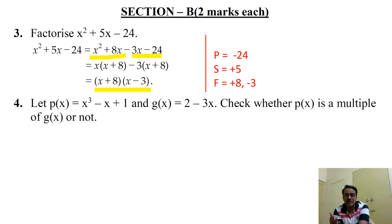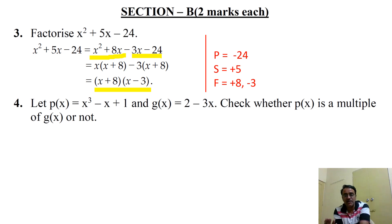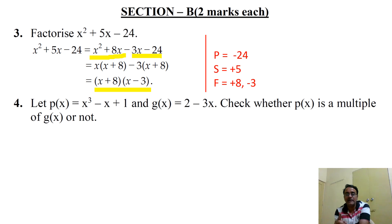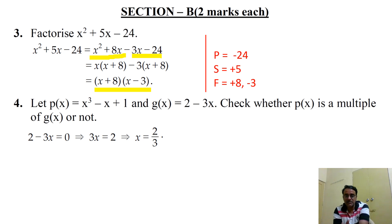Question 4: let p(x) = x³ - x + 1 and g(x) = 2 - 3x. Check whether p(x) is a multiple of g(x) or not. We check by finding the remainder — if the remainder is 0 then p(x) is a multiple, otherwise not. We equate 2 - 3x = 0 to get x = 2/3.